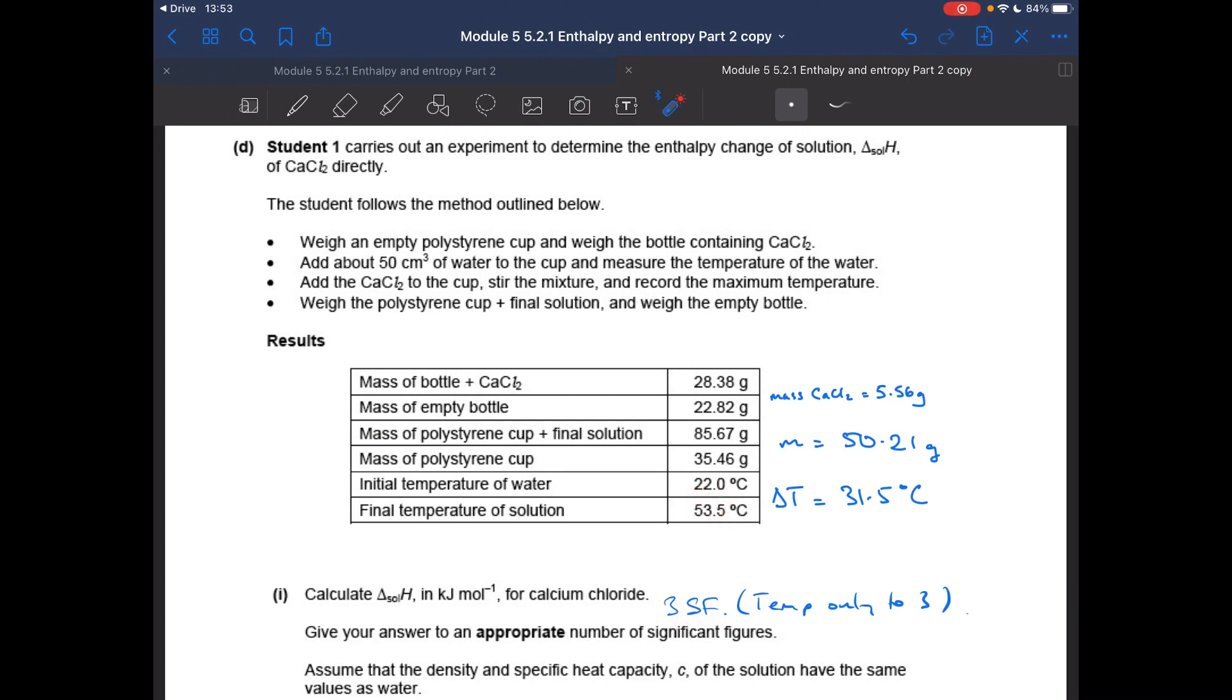So first thing we need to do is extract the mass of calcium chloride used, so that's 5.56 grams from the difference between those two. The mass of the solution in the cup is the difference between those two, so that's 50.21 grams, and the change in temperature is the difference between those two, 31.5 degrees C.